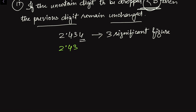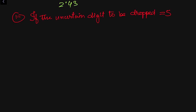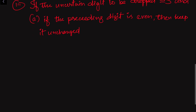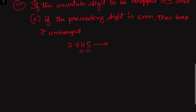Now let us go to our third case. If the uncertain digit to be dropped is equal to 5, there arise two conditions. In case one, if the preceding digit is even — suppose 2.445, we want to round up to three digits. This value to drop is equal to 5 and the preceding digit 4 is even, so we keep it unchanged. We have 2.44 after rounding off to three significant digits.